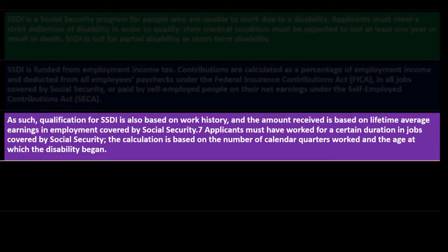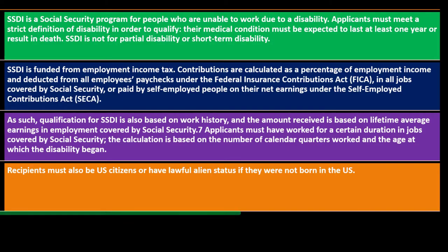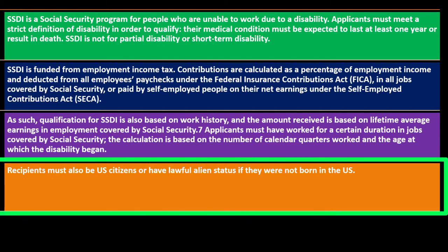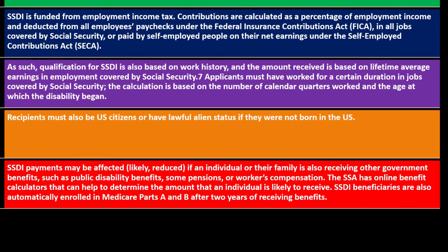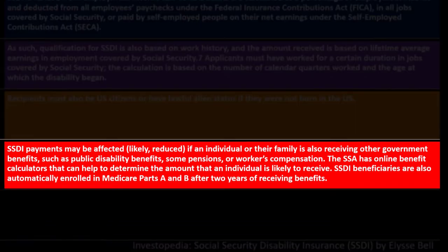Applicants must have worked for a certain duration in jobs covered by Social Security. The calculation is based on the number of calendar quarters worked and the age at which the disability began. Recipients must be U.S. citizens or have lawful alien status. SSDI payments may be reduced if an individual or their family is also receiving other government benefits, such as public disability benefits, some pensions, or workers' compensation.